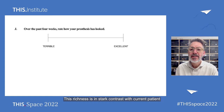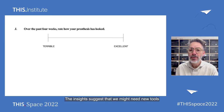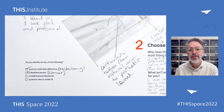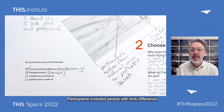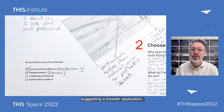This richness is in stark contrast with current patient-reported outcome measures, which in seeking quantitative evidence can be simplistic. The insights suggest that we might need new tools to support more nuanced communication between clinicians and patients. Participants included people with limb difference among a public audience, but also other patients and healthcare professionals, suggesting a broader application.